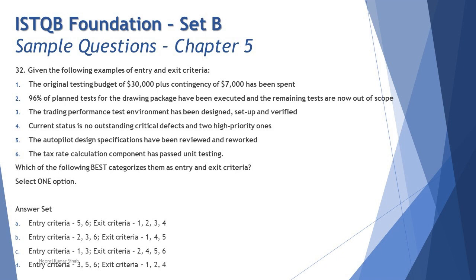Criterion 3: the trading performance test environment has been designed, set up, and verified — ready to get started. This is an example of entry criteria: the performance environment is now ready to be used for performance testing. Criterion 4: current status is no outstanding critical defects and two high priority ones. This tells us we can stop testing — if two high priority open defects meets our SLA expectations, we are good to exit. So criterion 4 is exit criteria.